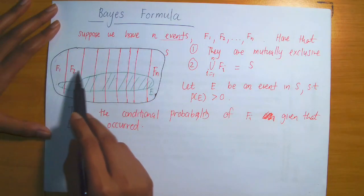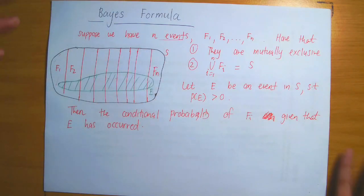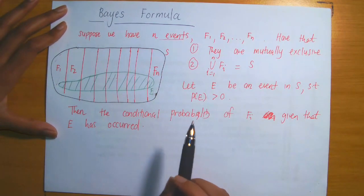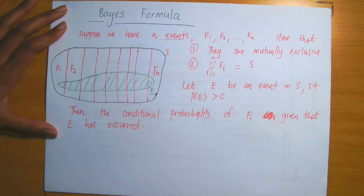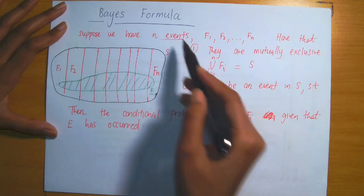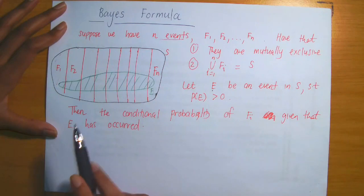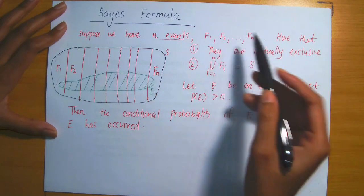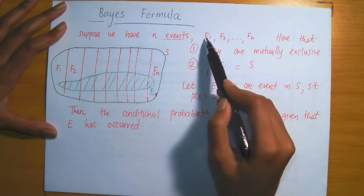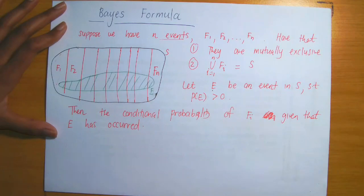Based on the way it has been drawn, if you took the union of F1 to FN, you would get back the whole sample space S. Now we introduce additional conditions that will affect the probabilities we calculate — that is event E. We let E be an event in your sample space whose probability is strictly greater than 0. Then we would like to calculate the conditional probability of one of the N events, Fi where i runs from 1 to N, given that E has occurred.